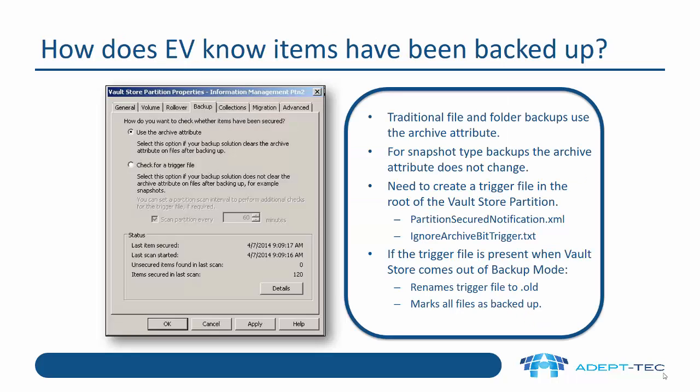How does Enterprise Vault know items have been backed up? There are two ways. Traditionally, we use the archive attribute — the backup product changes the archive attribute and Enterprise Vault picks that up. But for snapshot-type backups, the archive attribute doesn't change, so we need to use a different method: check for a trigger file. We need to create a trigger file in the root of the Vault Store partition. There are two options: create an XML file called partition-secured-notification.xml, or create a blank text file called ignore-archive-bit-trigger.txt. If the trigger file is present when the Vault Store comes out of backup mode, it'll rename that file to .old and mark all the files as backed up.